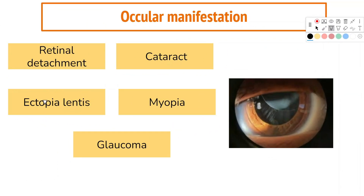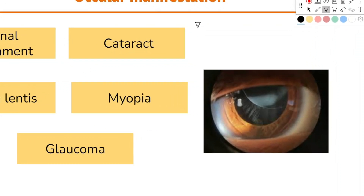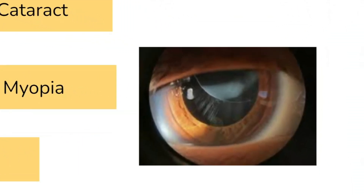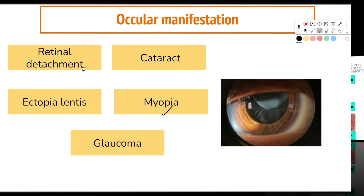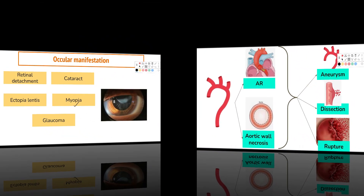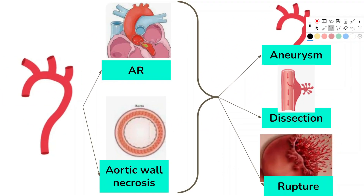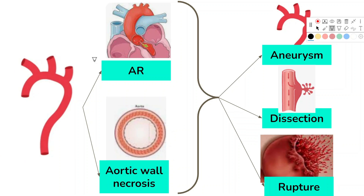A variety of ocular manifestations can occur, such as ectopia lentis — subluxation of the crystalline lens — as well as myopia, cataract, glaucoma, and retinal detachment. However, the most serious features are cardiovascular: the aorta dilates over time, which is a risk factor for aortic insufficiency, also known as aortic regurgitation, where blood leaks back into the left ventricle during diastole.